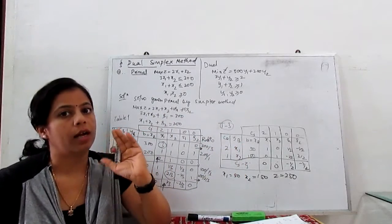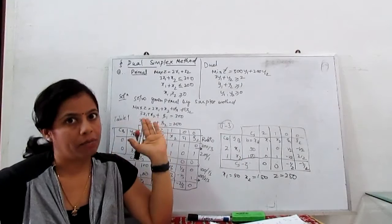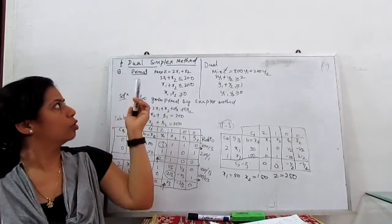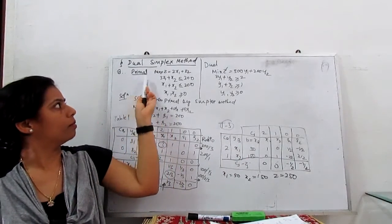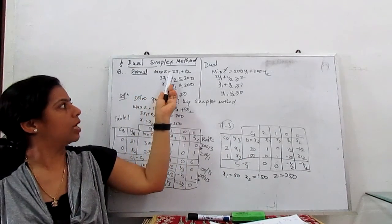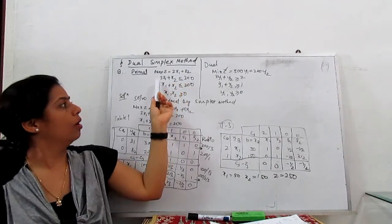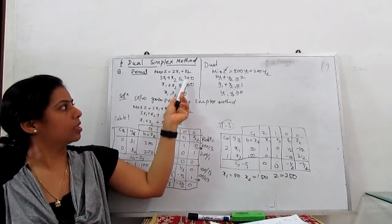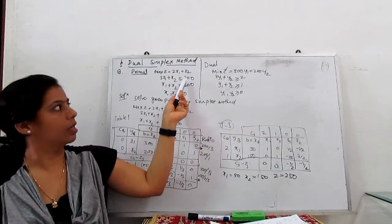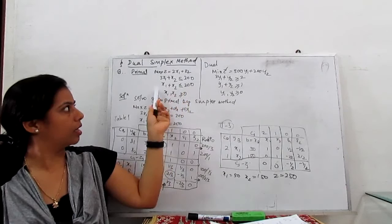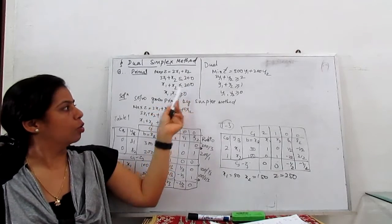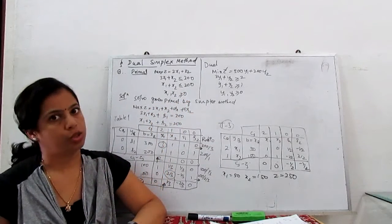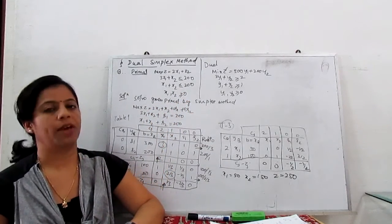We start working with the primal using the simplex method. The given problem is: maximize z = 2x1 + x2, where 3x1 + x2 ≤ 300, x1 + x2 ≤ 200, and x1, x2 are non-negative variables.